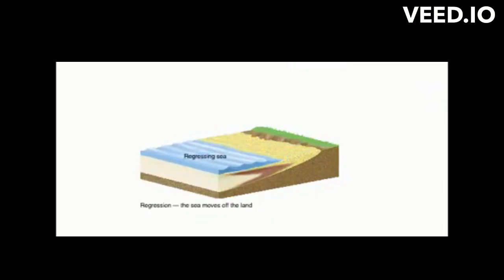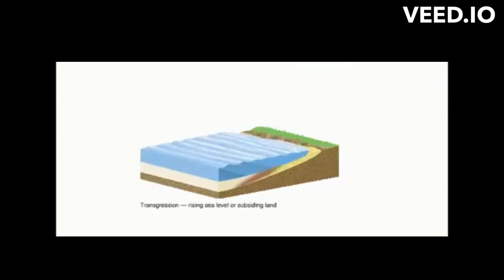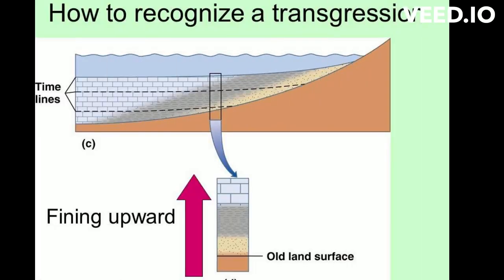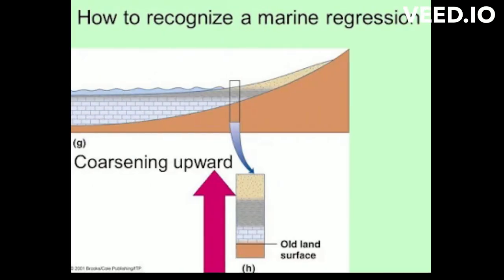Transgression is shown by marine facies overlying non-marine facies, fining upwards — for example, limestone on top of sandstone. But falling sea level is regression, where non-marine facies overlie marine facies, coarsening upwards, with sandstone on top of limestone.